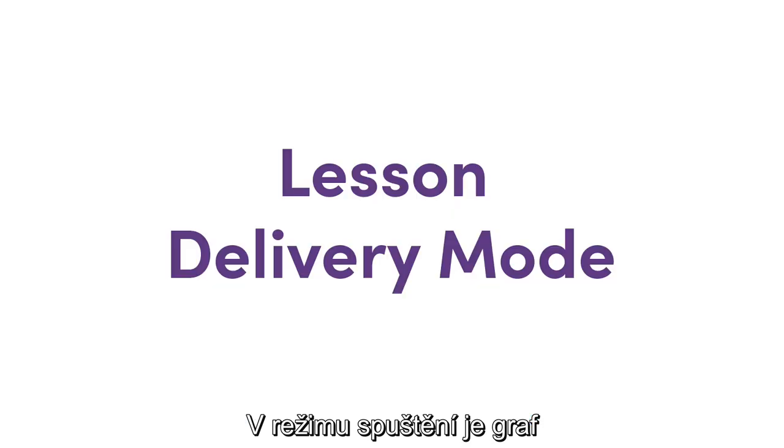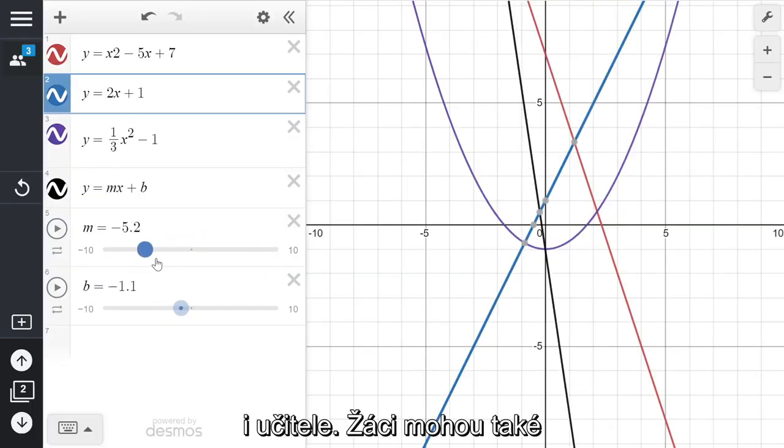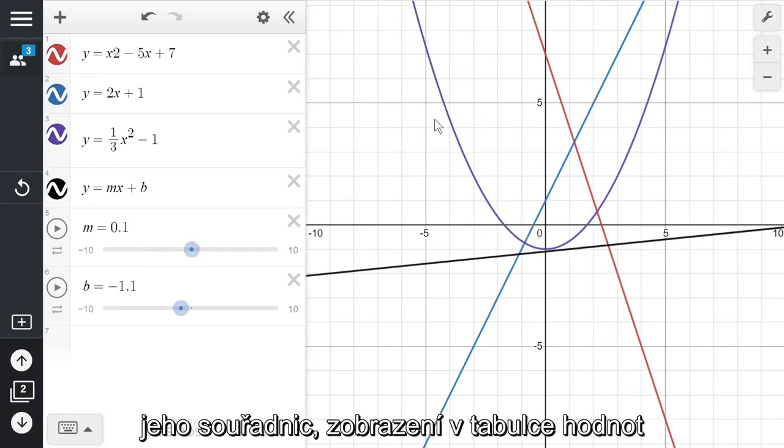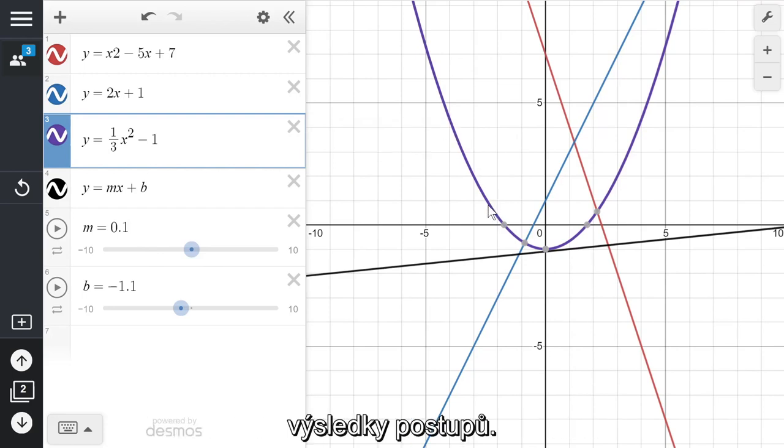When in lesson delivery mode, the graph is interactive on both student and teacher devices. Students can also select a point on the graph to display the coordinate, or add additional data, tables, or equations to make their own representations.